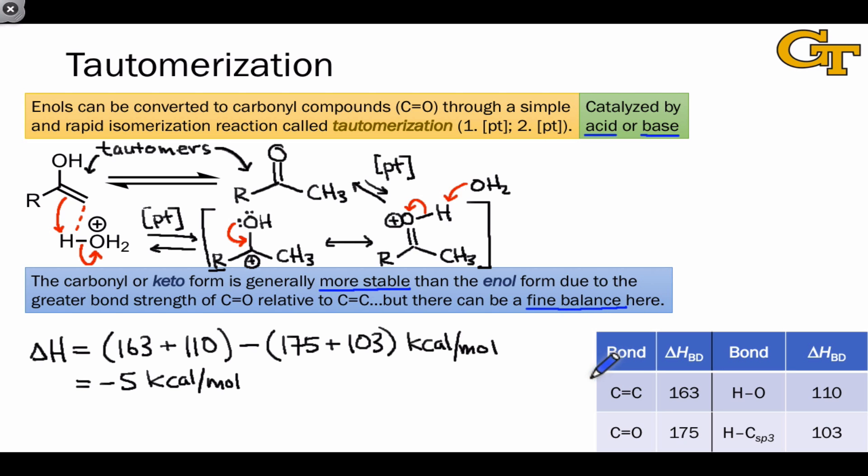For our purposes, we're going to constrain ourselves in Chem 2311 to situations where the keto form is clearly favored over the enol form, with one important exception that's worth mentioning in case you think about it later, which is the case of phenols. Phenol is an enol. It contains a carbon-carbon double bond linked directly to a hydroxyl group, and there is a keto form of a phenol that looks like this.